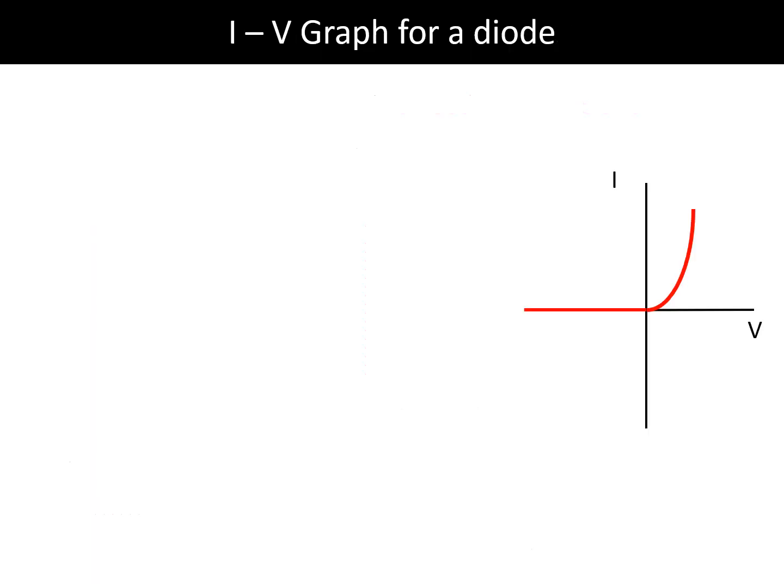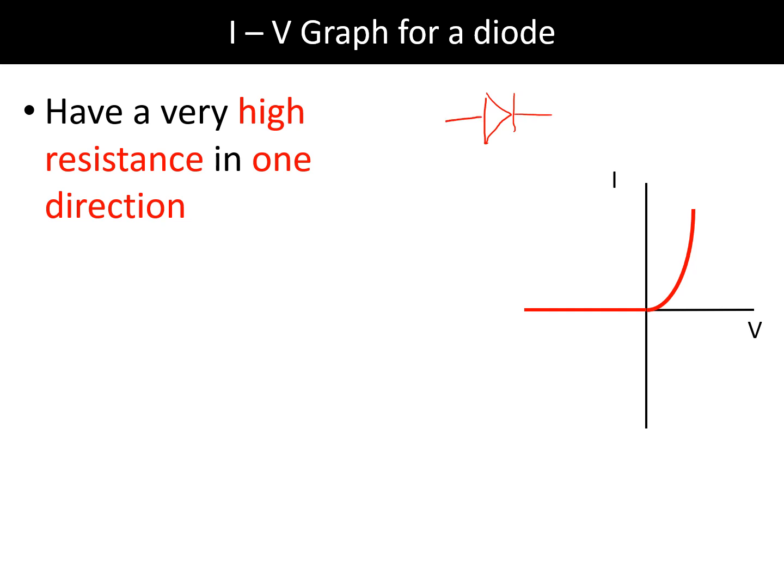And next up we have the I-V graph for a diode. A diode, which looks like this, has a very high resistance in one direction. So the current can only flow in this way, left to right - it looks like a play symbol here in one direction and it looks like a wall of resistance in the other direction. And that means we get a current-voltage graph that looks like this. It usually goes flat for a little while until you reach what's called the breakdown voltage. This is just enough energy so that the diode conducts electricity, and then afterwards it will conduct electricity very, very well.